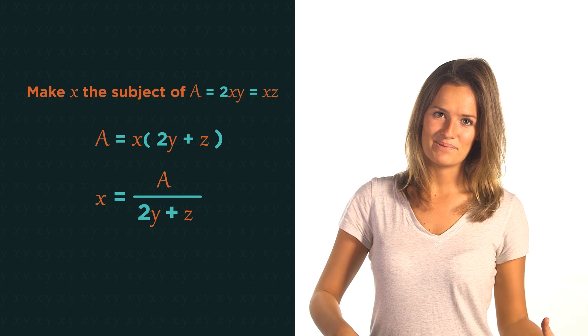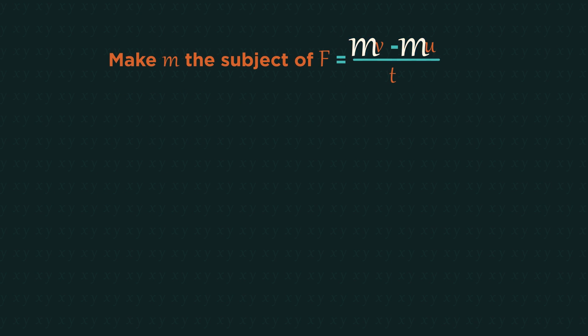So let's have a look at an example. M appears twice so we know we'll probably need to factorize at some point. Start by moving the T as that's least connected to the M's. Two M's means factorize the right hand side. Now divide by the V minus U bracket and you've changed the subject to M.